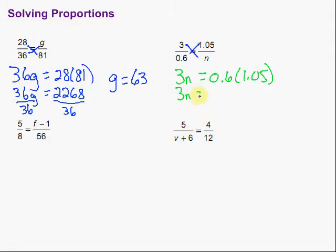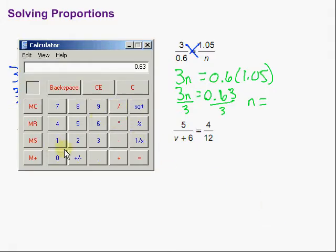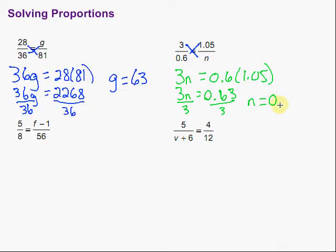So 3n equals 0.63. Finally, again, divide by 3. And then we get n equals, divide that by 3, and I believe we're going to get 0.21. Sure enough. Alright, 0.21.